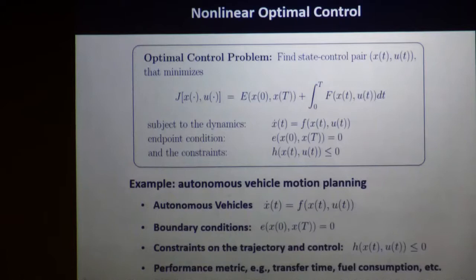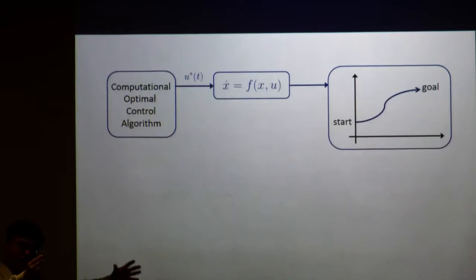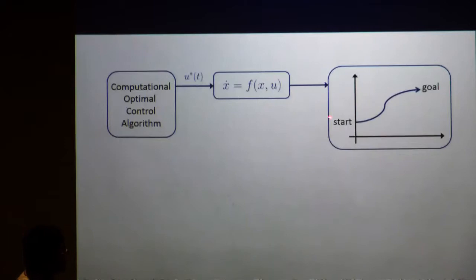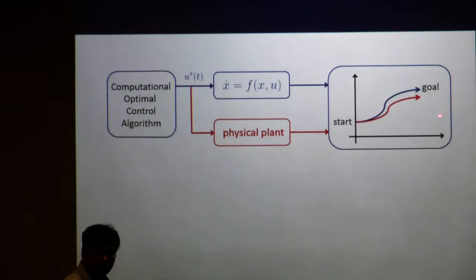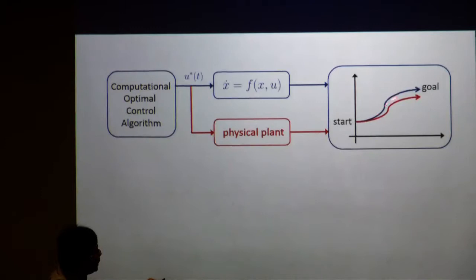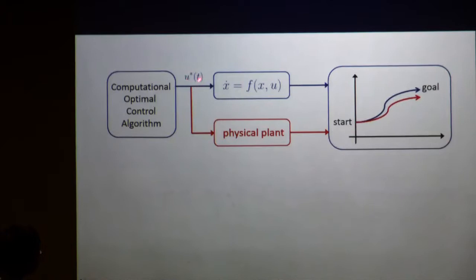Once you solve the optimal control, you have a control application. You first model it as an optimal control problem, then use numerical methods to generate the open-loop control. Once you feed your open-loop control into a dynamic system, you generate a state trajectory — for most cases, the state trajectory will go from your starting location to some target location. However, when you implement your control into a real physical system, the real trajectory is typically different from the planned trajectory.